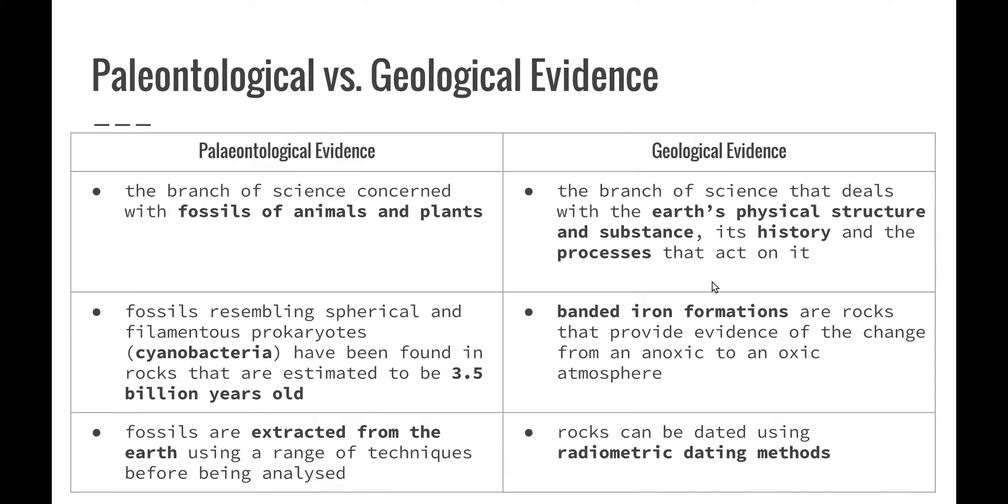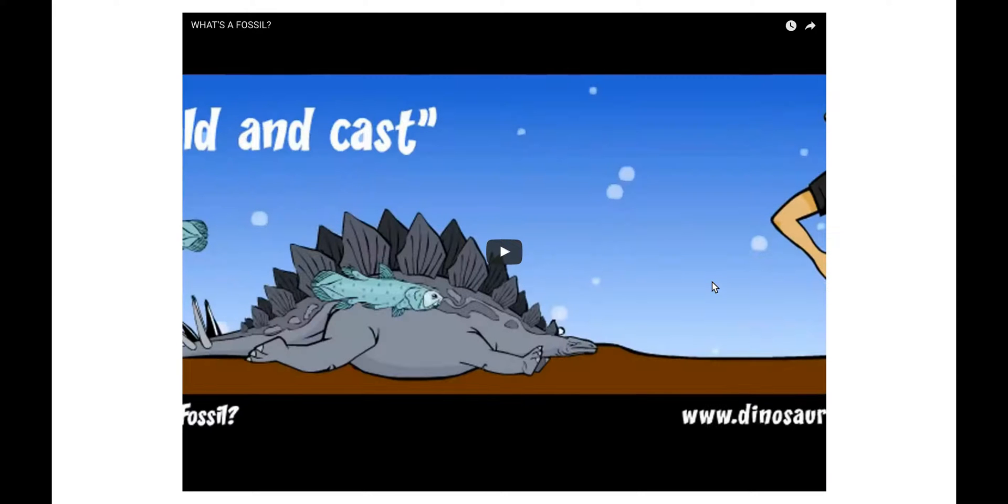And rocks can be dated using a technique called radiometric dating, where they use different elements to see the levels of different elements that are included in rocks in order to try to find out the age of them. So this little video talks about fossils. So what is a fossil? How are different fossils formed? And then we're going to watch a quick video on what radiometric dating is and how it is used to date particular things.